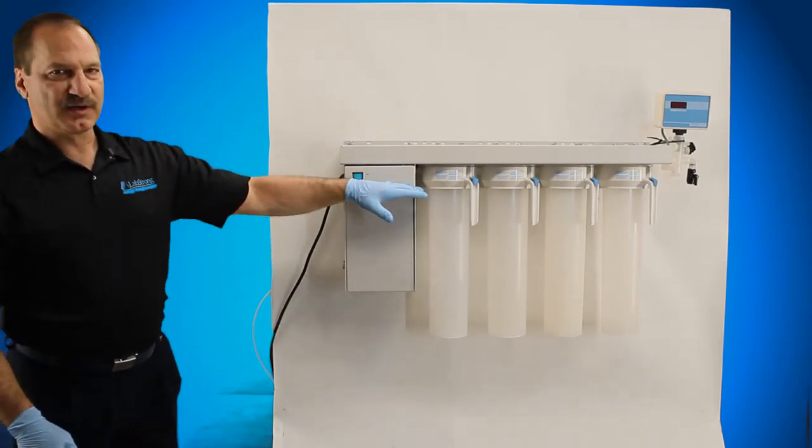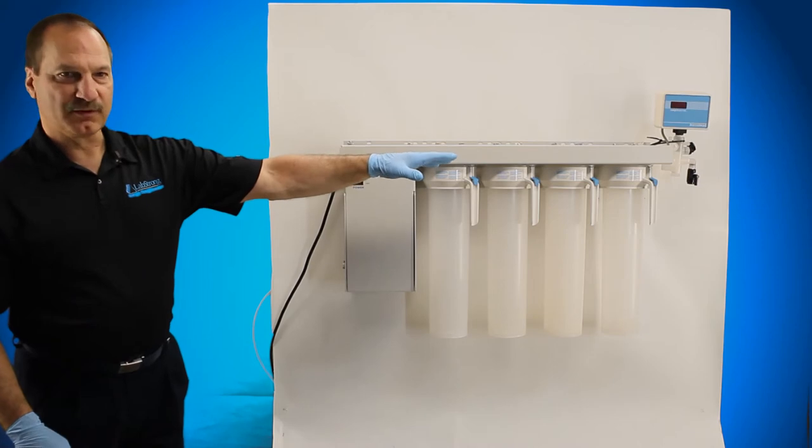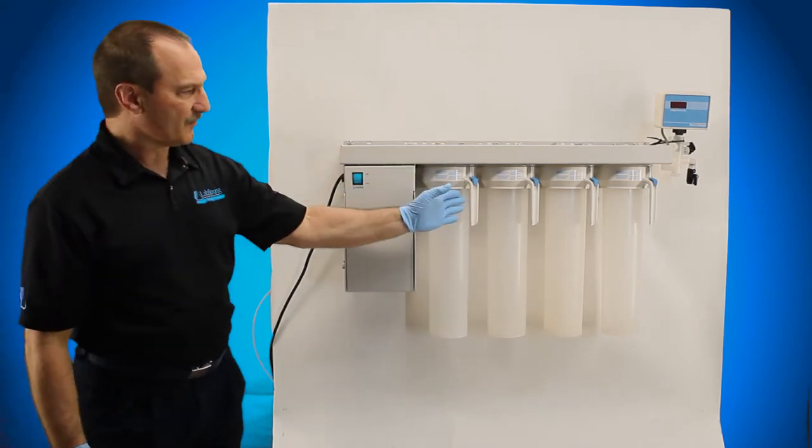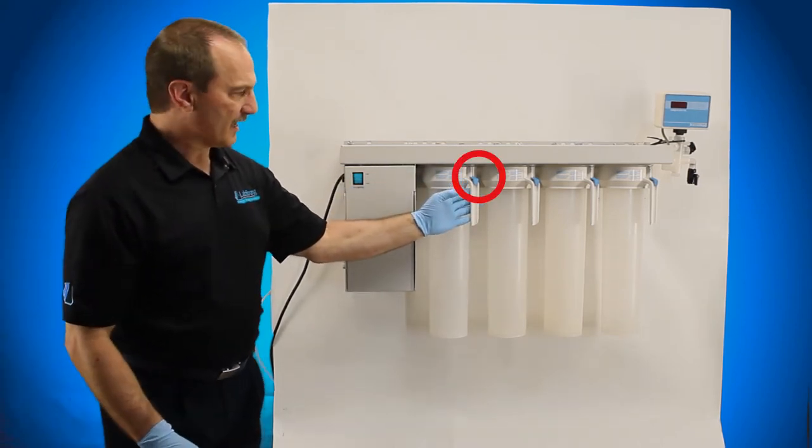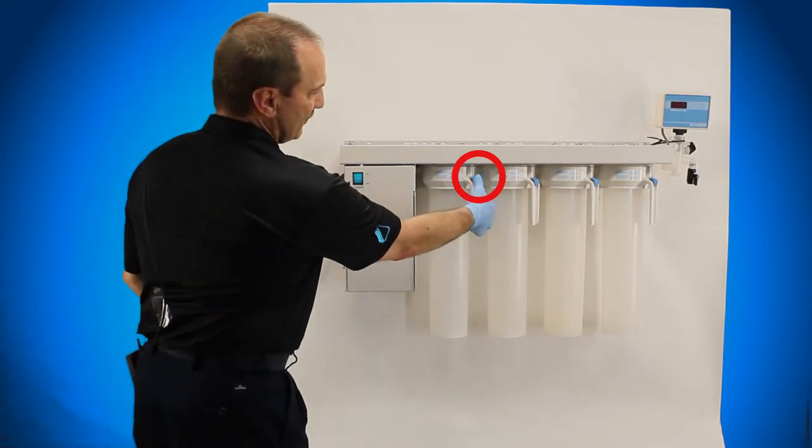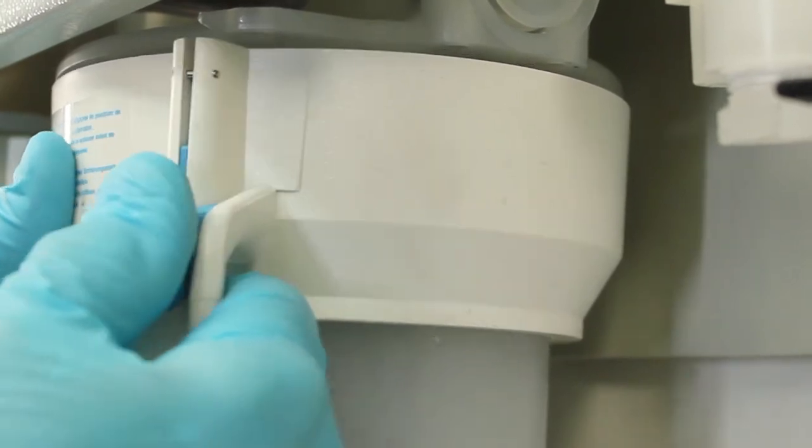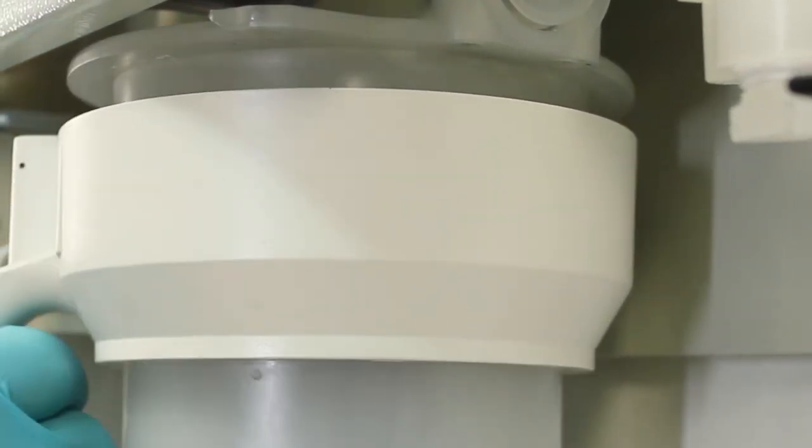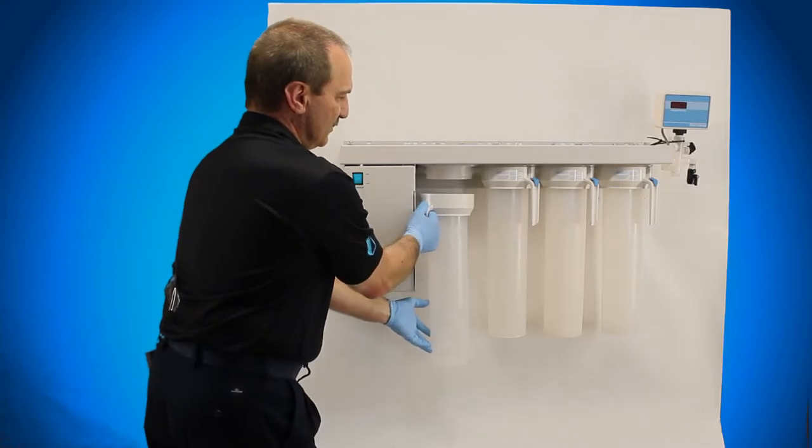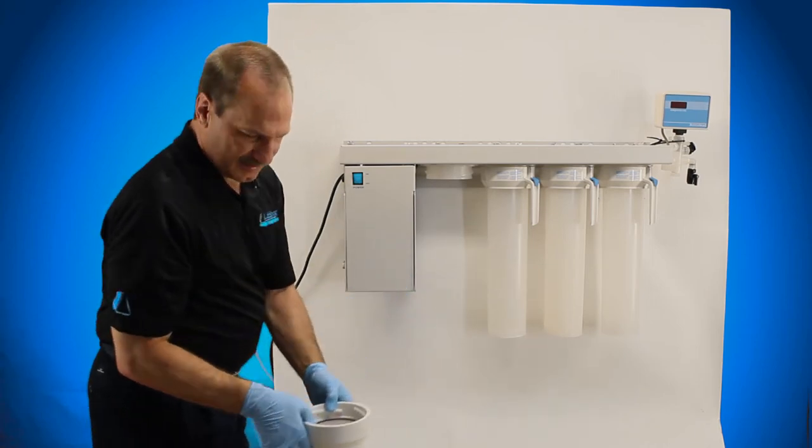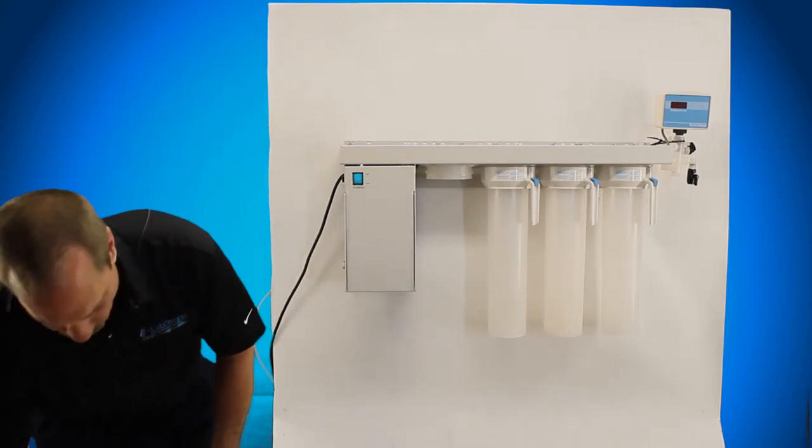Once the system is depressurized and you no longer have any water coming out of your valve, then you're going to want to take off your quarter turn locking canisters. To do that, you're going to pull down on this ring handle. You're going to quarter turn, pull it, drop it down, and then set it aside. You want to do that for all four.